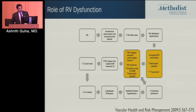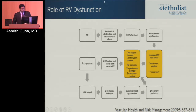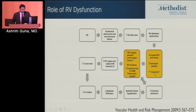Pathophysiologically, one of the main hallmarks of all risk stratification tools is the importance of RV function in determining prognosis. Once patients have PE with anatomical obstruction and neurohormonal effects in the pulmonary vasculature, it increases RV afterload, leading to RV dilatation and dysfunction, increased RV wall stress, and elevation of biomarkers — either BNP or troponin — with increased RV oxygen demand and decreased oxygen reserve.